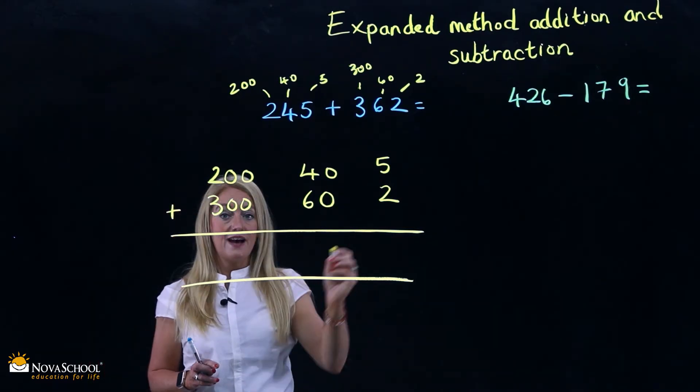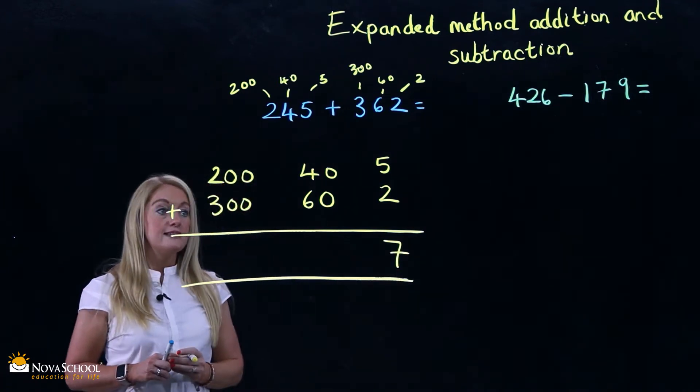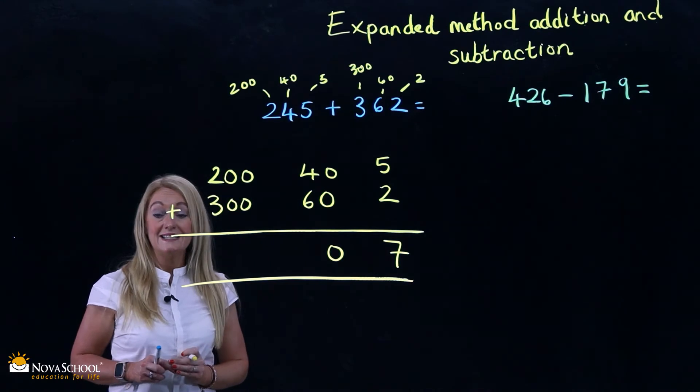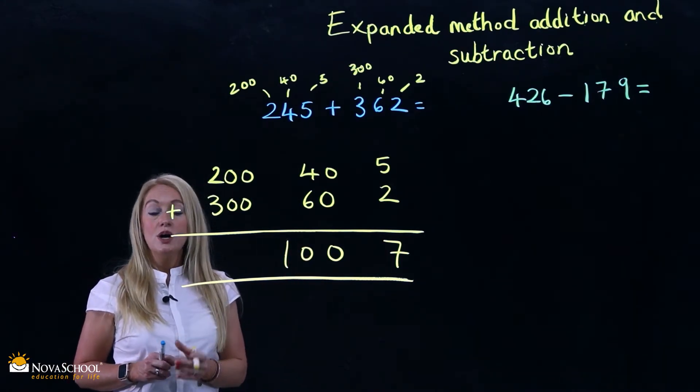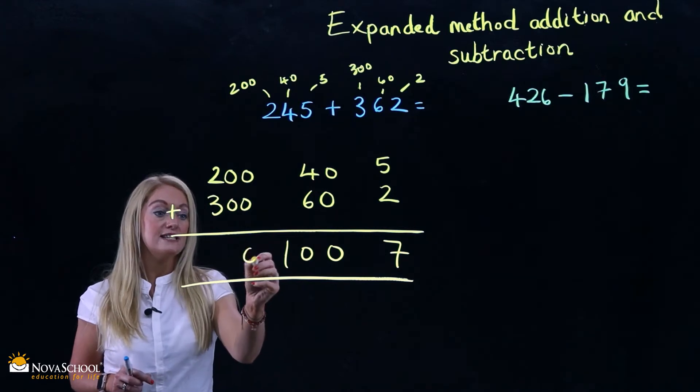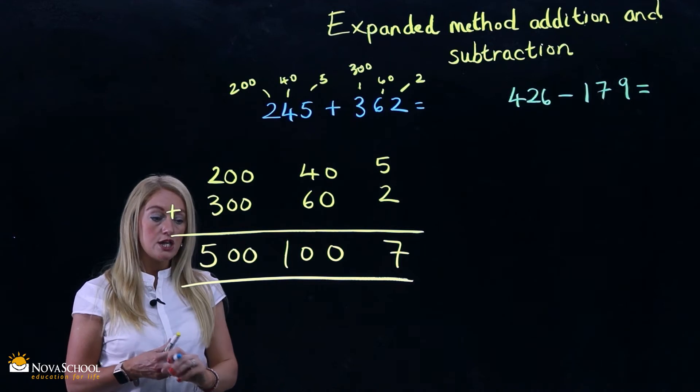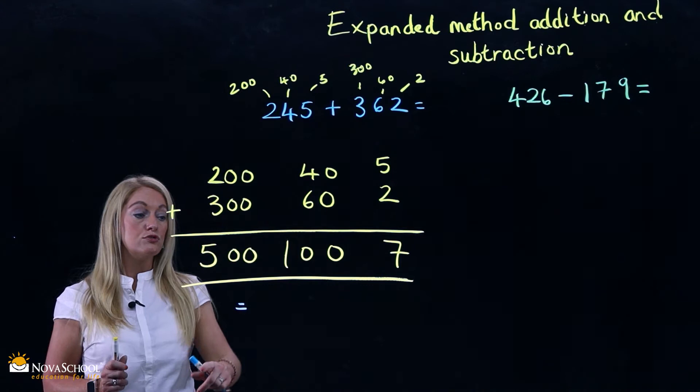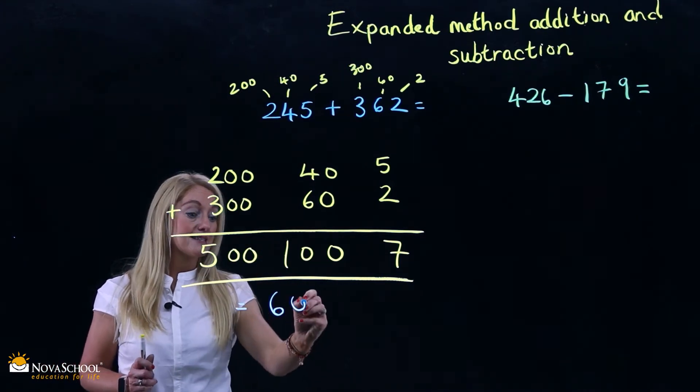Are we ready? 5 add 2 is 7. 0 add 0, 0. 4 add 6 is 10. And 200 add 300, we could pop our zeros in, and 2 add 3 is 5. Okay, so our final answer here. All we do now, pop them all back together. 500 add 100 is 607.